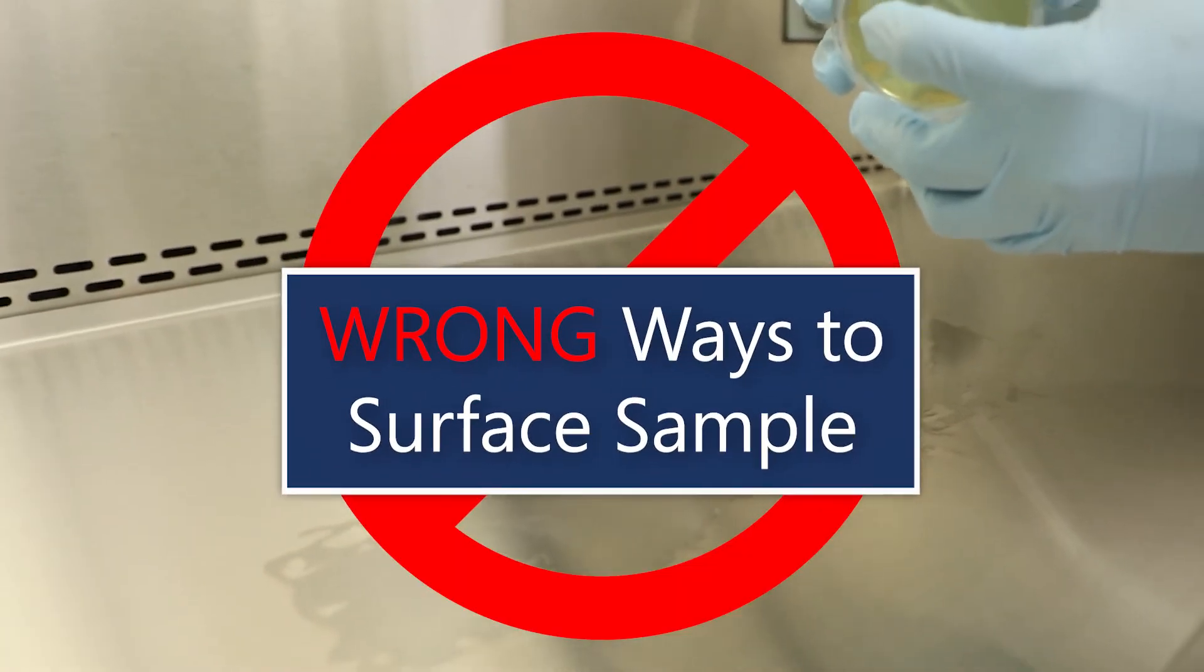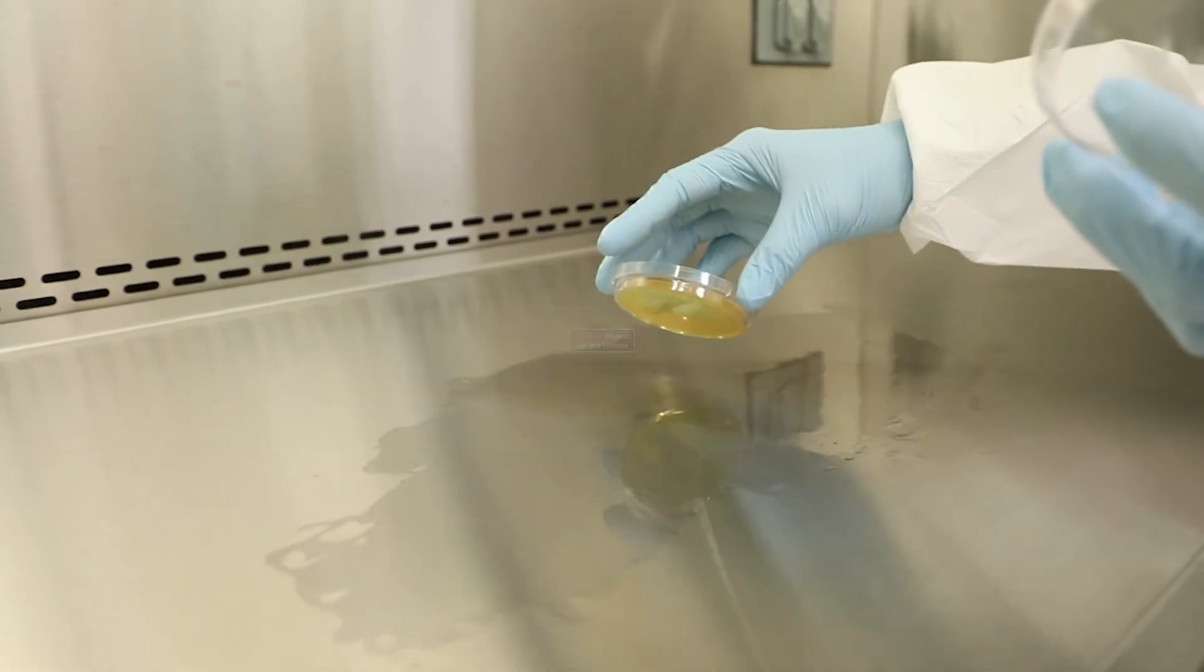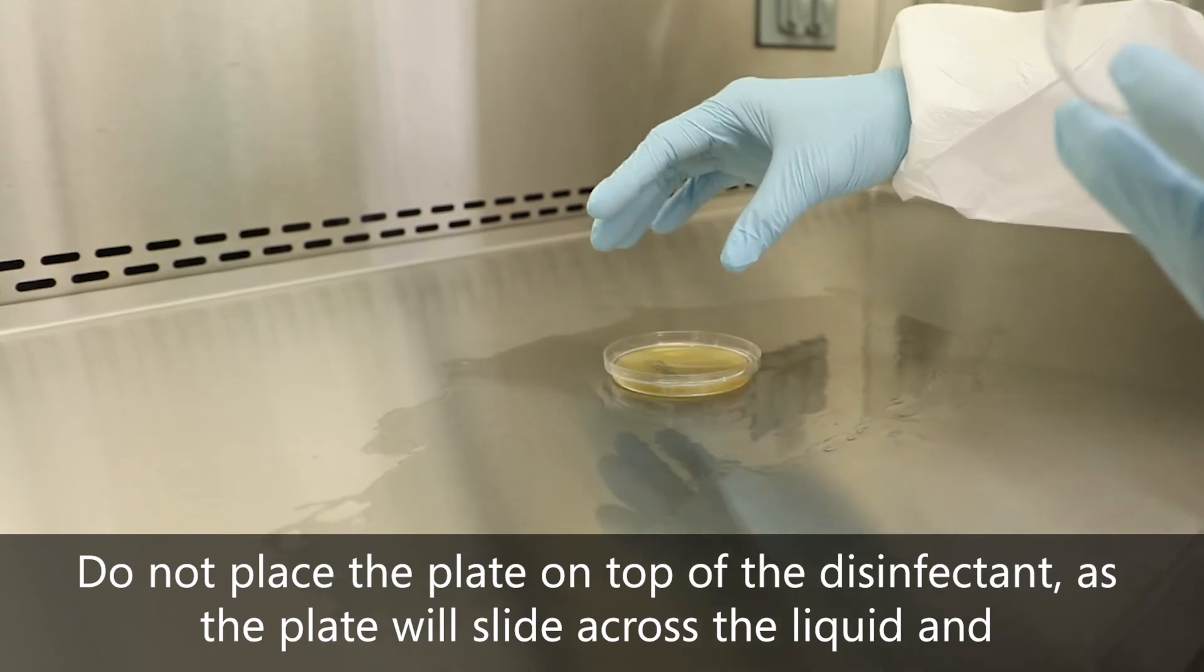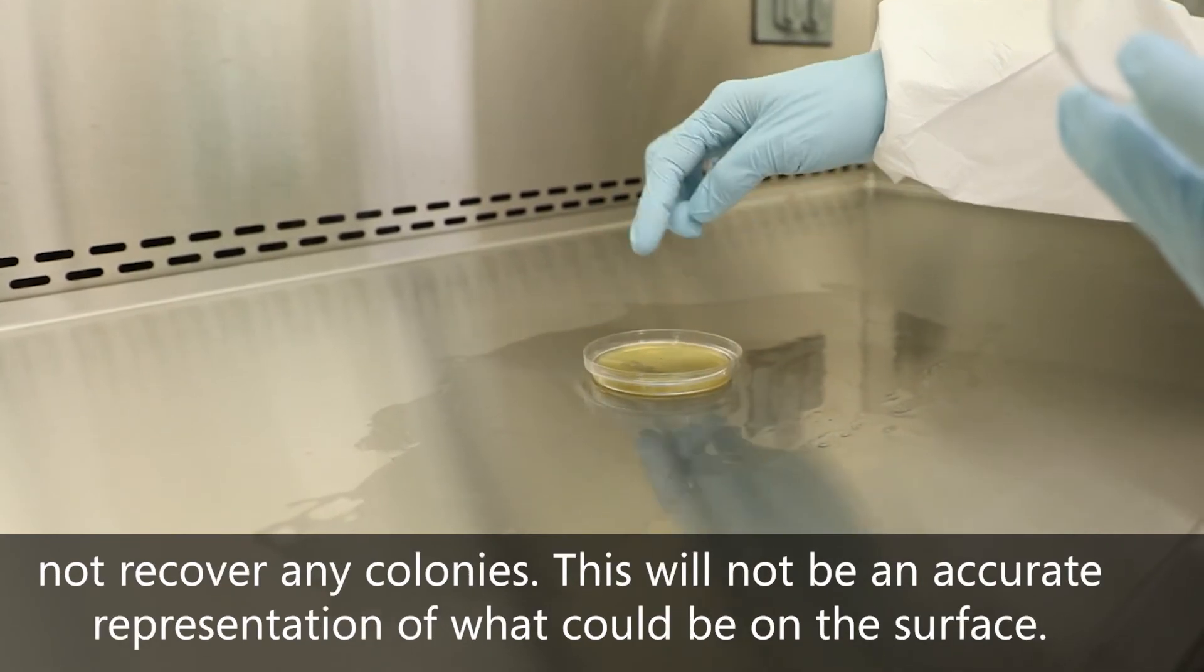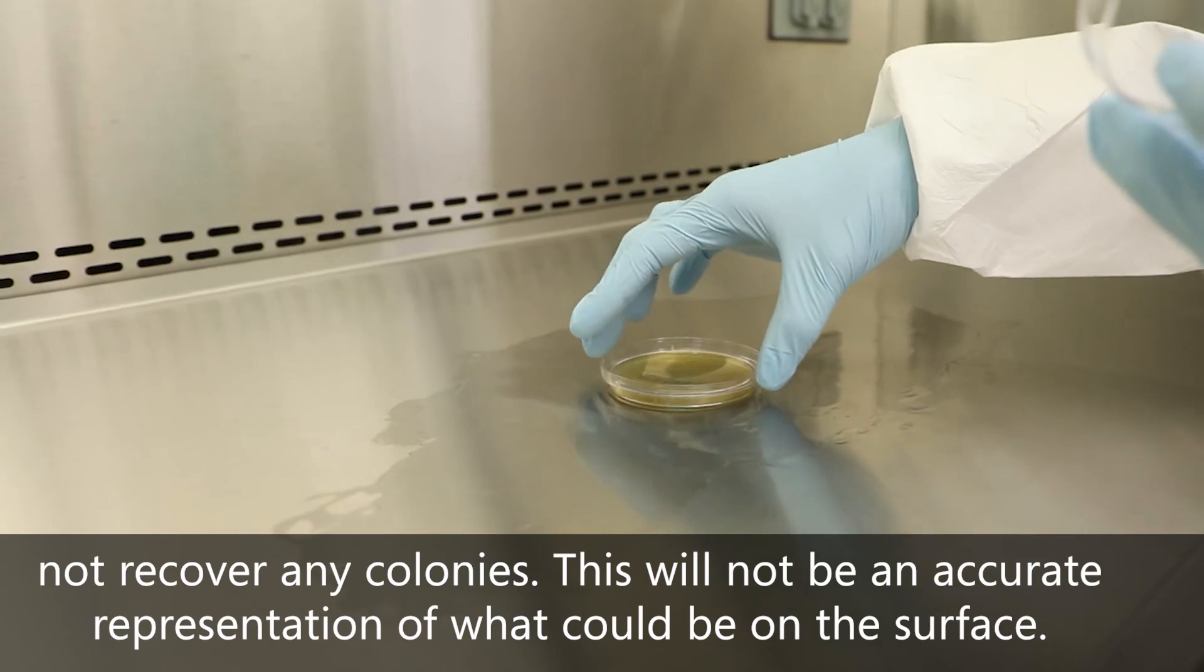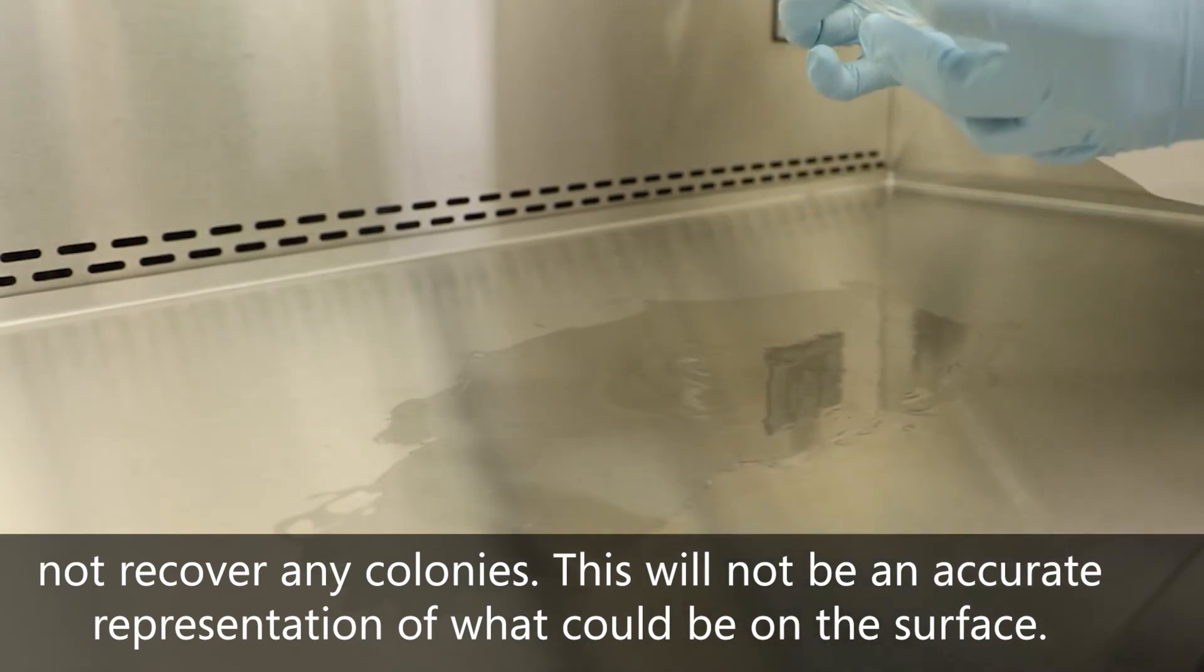Here are a few examples on how not to surface sample. Do not place the plate on top of the disinfectant as the plate will slide across the liquid and not recover any colonies. This will not be an accurate representation of what could be on the surface.